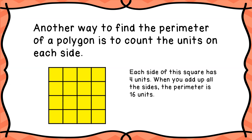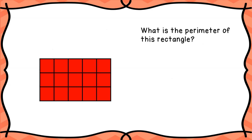Another way to find the perimeter of a polygon is to count the units on each side. If you look at this yellow square, each side has four units — one, two, three, four — and you count all four sides the same way. When you add up four plus four plus four plus four, you get sixteen units, which is the perimeter of the square.